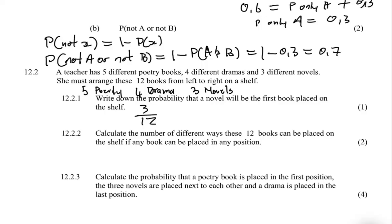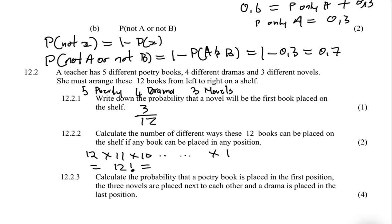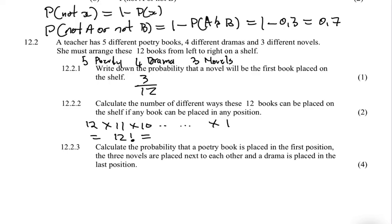Question 12.2.2: calculate the number of different ways these 12 books can be placed on the shelf if any book can go in any position. For the first book she has 12 options, the second 11, the third 10, and so on down to 1. The answer is 12 factorial — put that in your calculator.